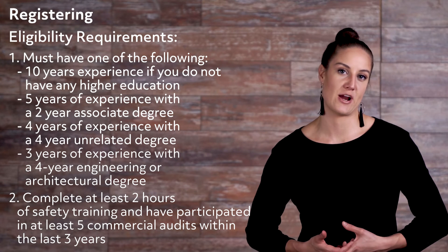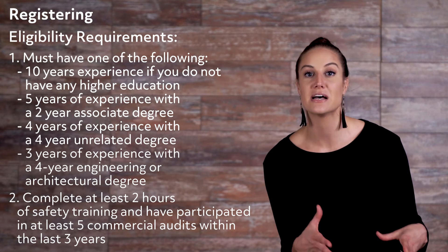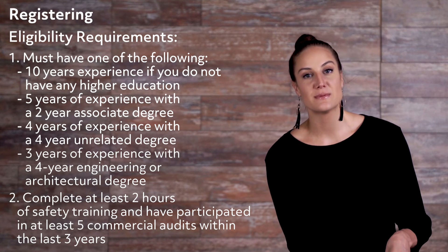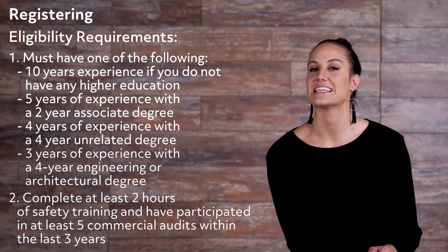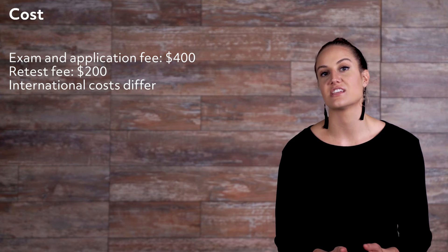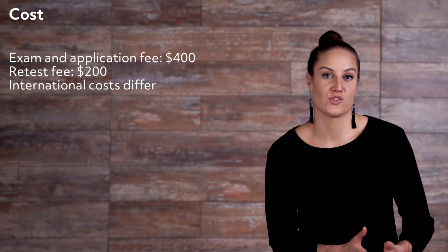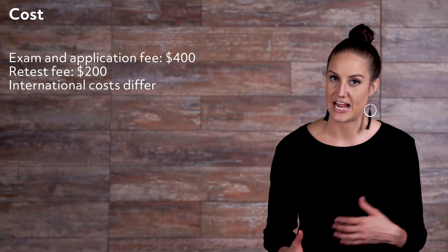If you meet the eligibility requirements, the next step is registering for the CEA preparatory training seminar, which must be taken through an approved training provider. After you have completed the seminar training registration, you should then complete the certification application and register for the CEA exam. The examination and application fee is $400, and $200 to retest. Head to AEE's website to register for your training seminar and apply for certification and testing. Candidates seeking an international certification program will need to reach out to their local training provider for registration and application costs.